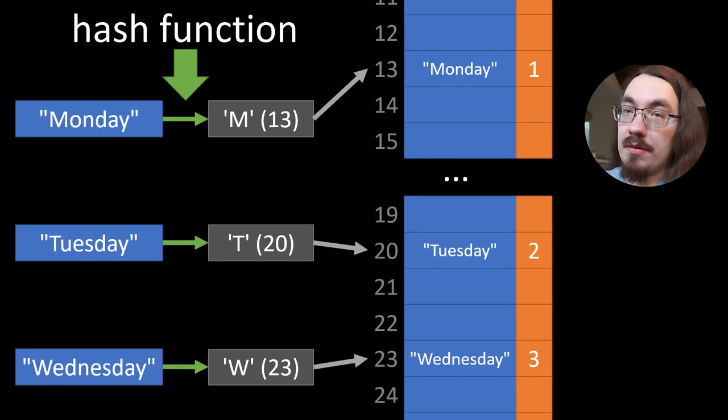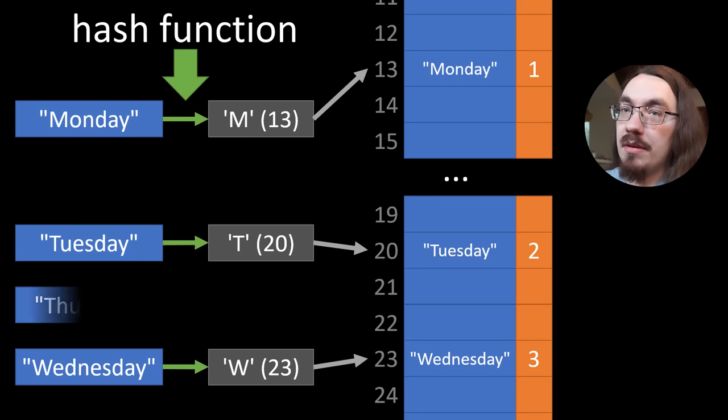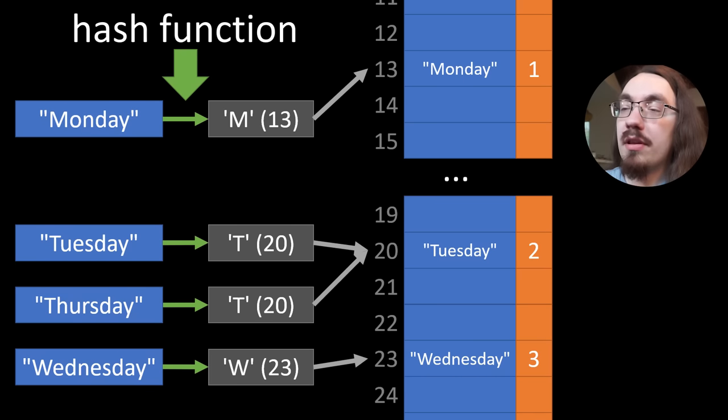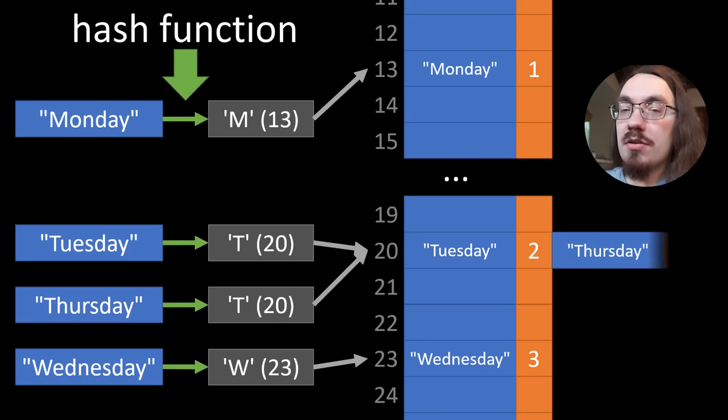But there's a problem, what happens if we have two days that start with the same letter? For example, Thursday starts with the letter T, so it would take up the same array slot. Now different hash table schemes do different things in this case, but all general purpose hash tables need to deal with this problem. We don't want this behavior, it kind of slows down the hash table, but it's a fact of life for most hash tables that they have to deal with collisions.